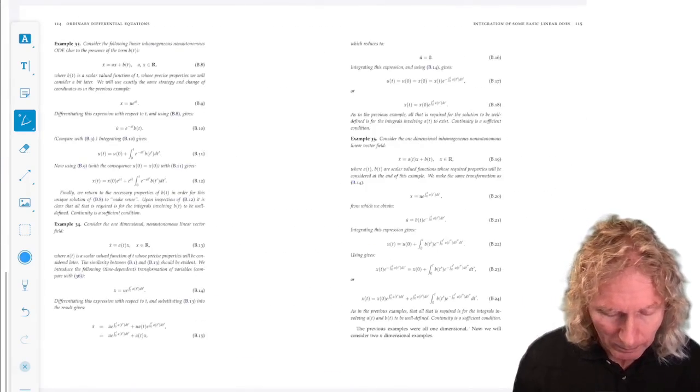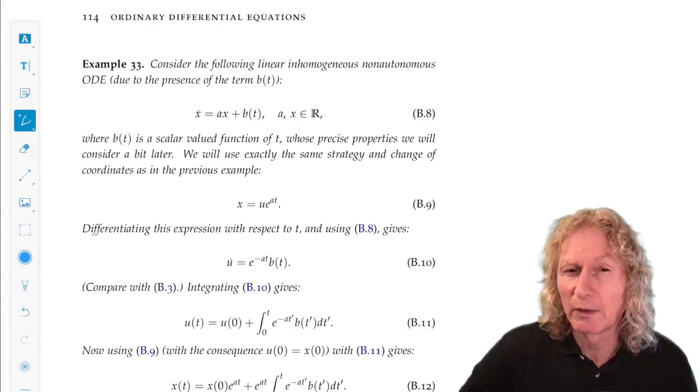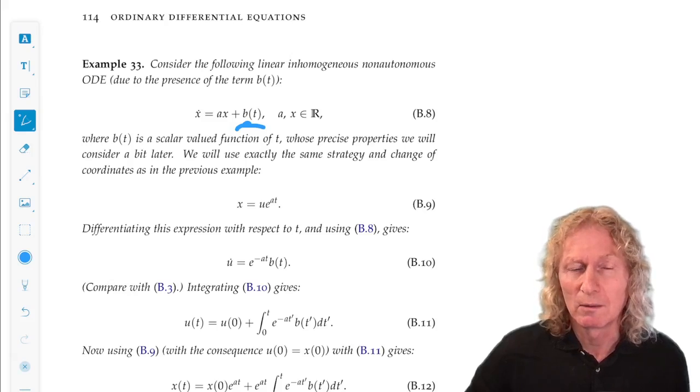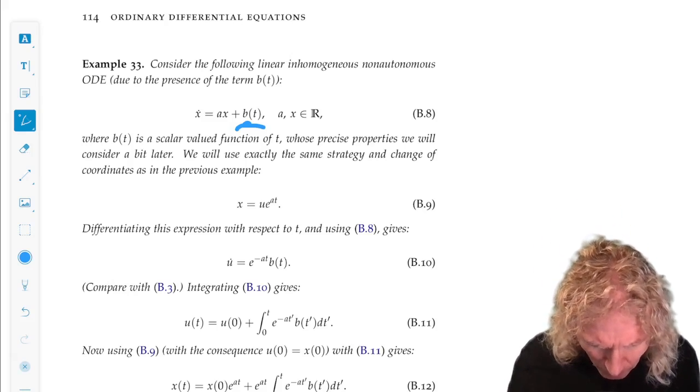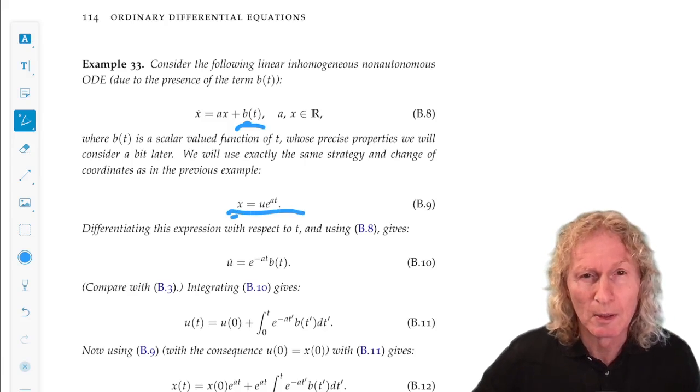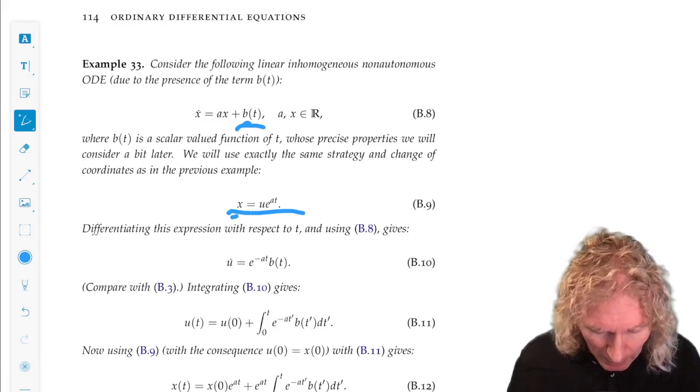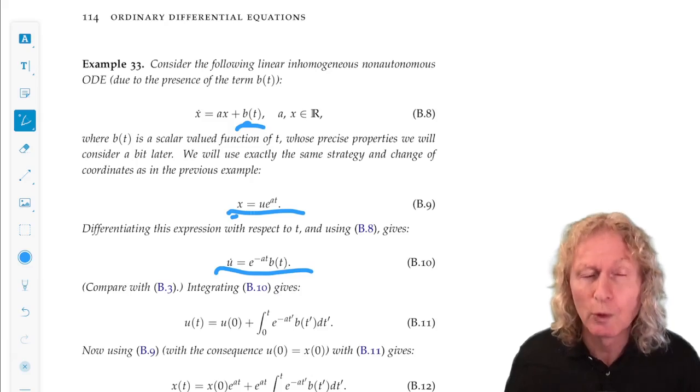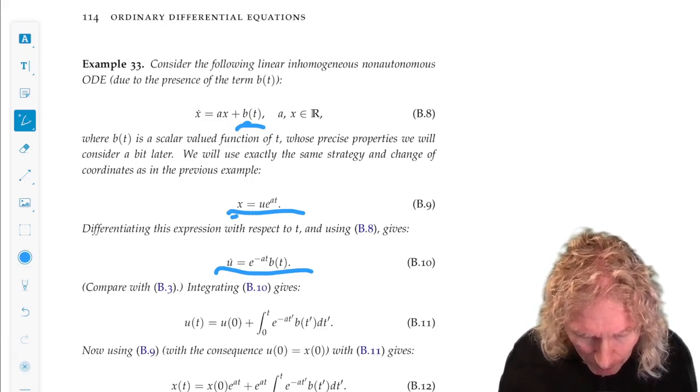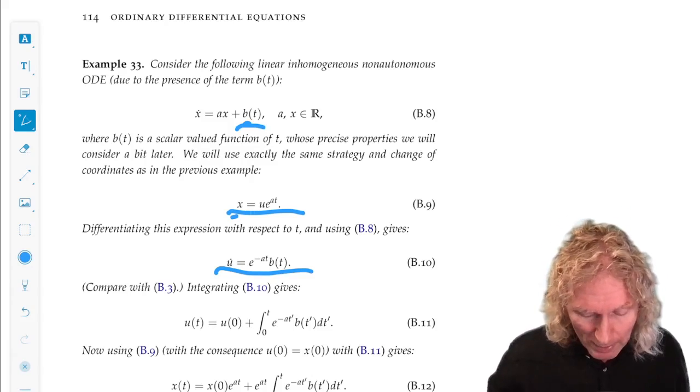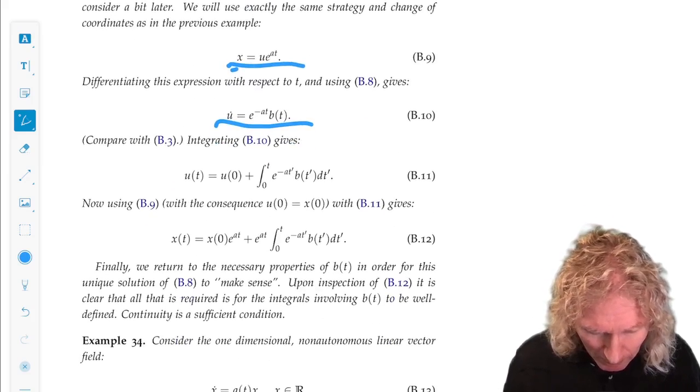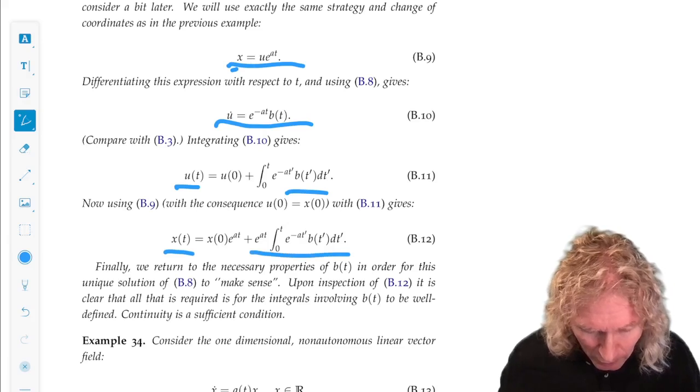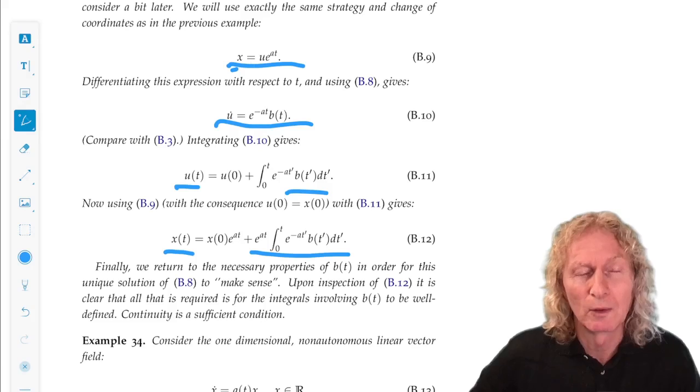Okay, now let's look at that same X dot equals AX, but now let's add a time-dependent term B of T to it. And now how do we do this? Well, we're going to use exactly the same change of variables. And if we run that through the algebra, we don't get U dot equals zero this time, but we get U dot is some function of T, e to the minus AT times B of T. We can integrate that for U of T. Plug back in what U of T is in terms of X, getting the initial conditions right, and this is the solution to that equation.